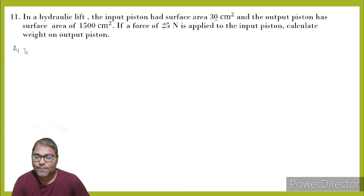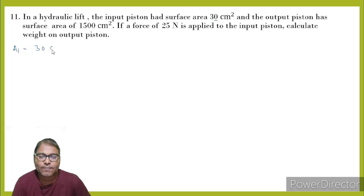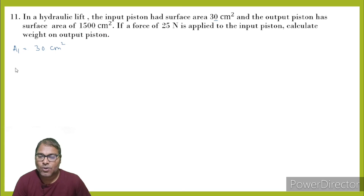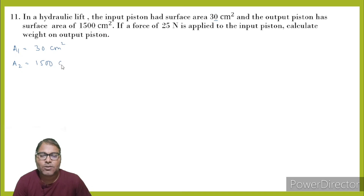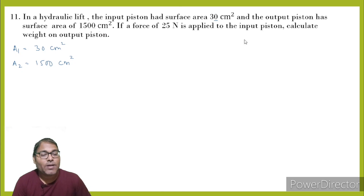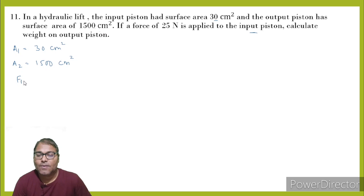Next, question number 11. The input piston has an area A1 of 30 centimeter square and the output piston has an area A2 of 1500 centimeter square. A force F1 of 25 Newton is applied to the input side.